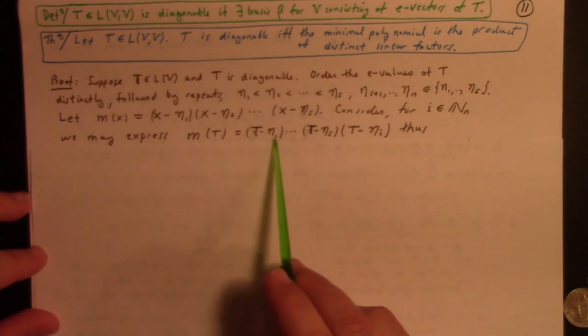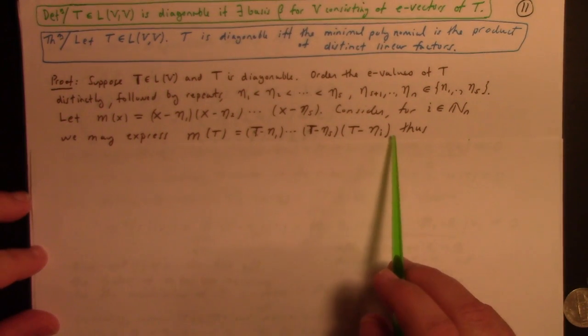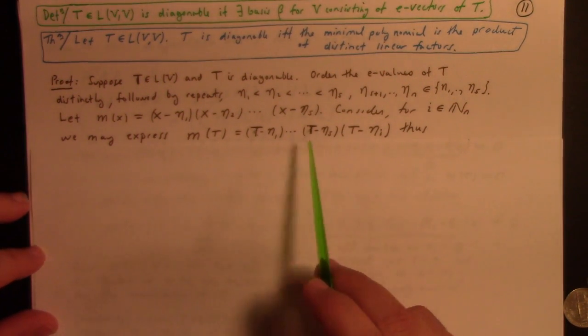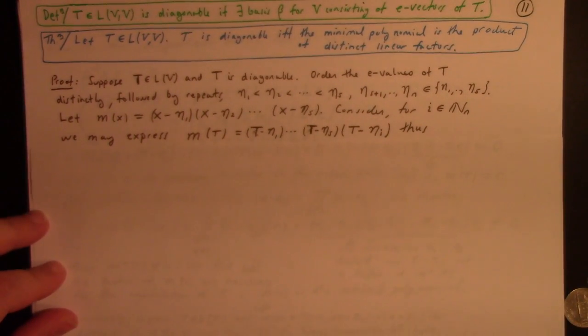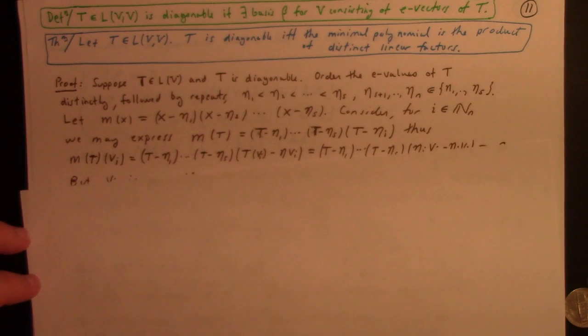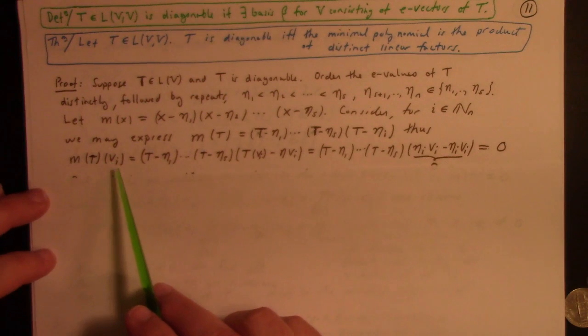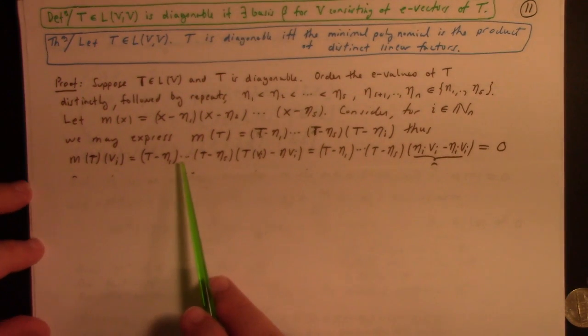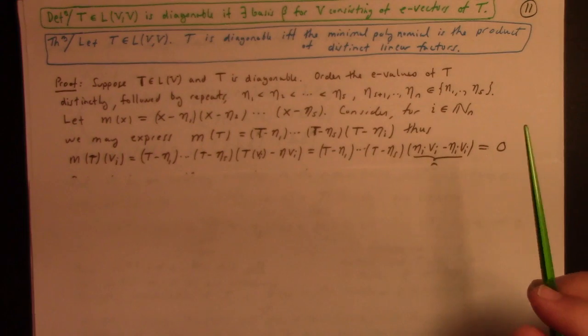You collect S distinct eigenvalues and form the product like this of the first S distinct ones. We don't have to have an ordering in our field. So if i is a natural number, we can express m of t as t minus eta 1 to the t minus eta S, right? I just pulled out the i-th one like that. They're commuting, so I can pull the i-th one out if I want. What is vi? I don't think I said what vi was here.